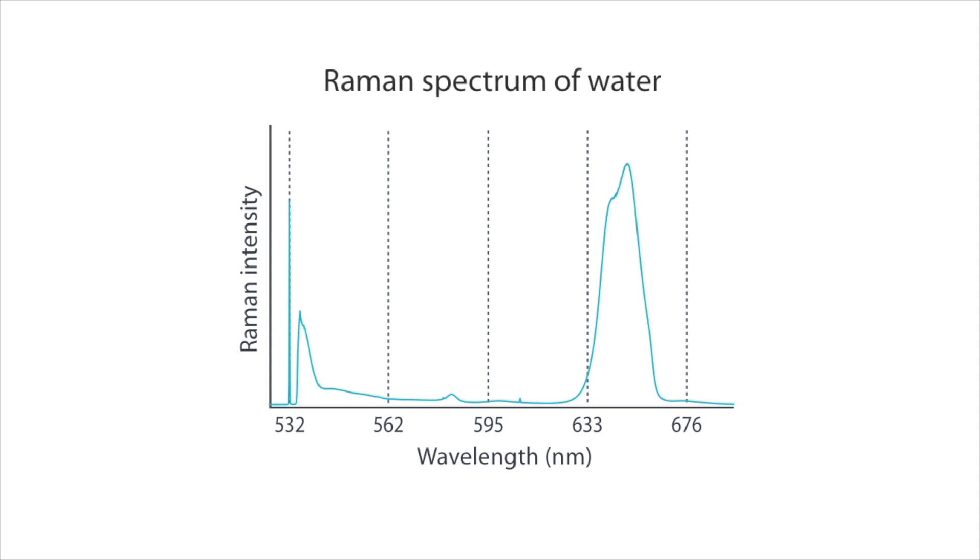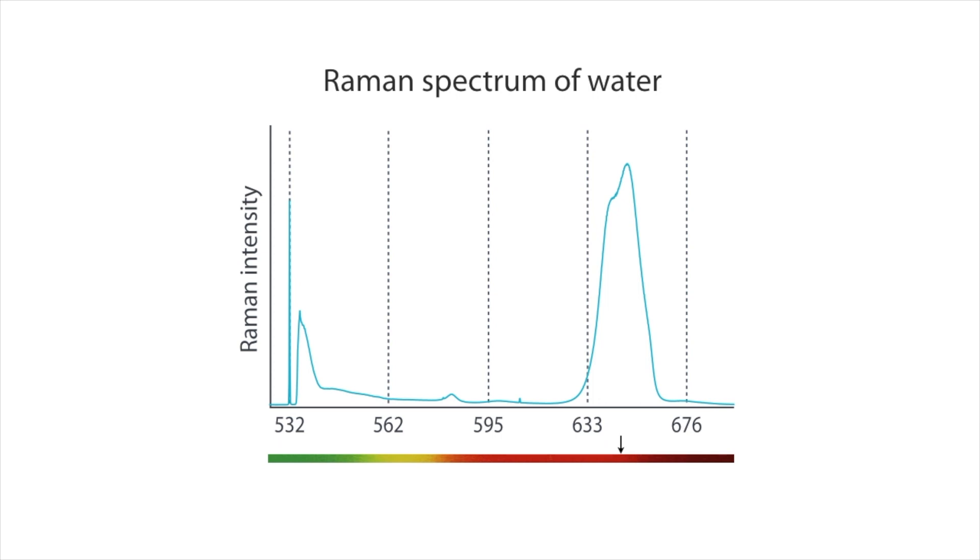This is the Raman spectrum of water. When using an excitation wavelength of 532 nanometers, the Raman peak of water appears around 650 nanometers, the wavelength of the color red. That is why the Raman light was visible as red light.